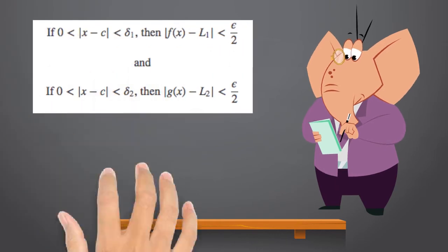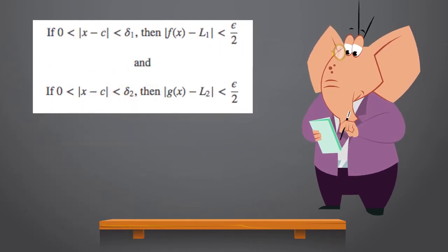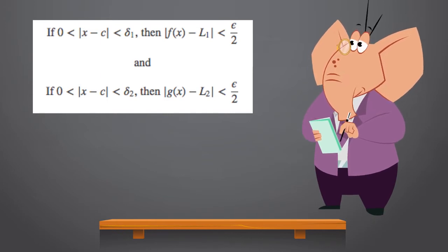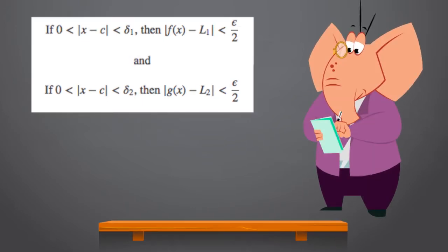There must consequently be a delta_1 > 0 and a delta_2 > 0, such that if 0 < |x - c| < delta_1, then |f(x) - L1| < epsilon/2. And, if 0 < |x - c| < delta_2, then |g(x) - L2| < epsilon/2.